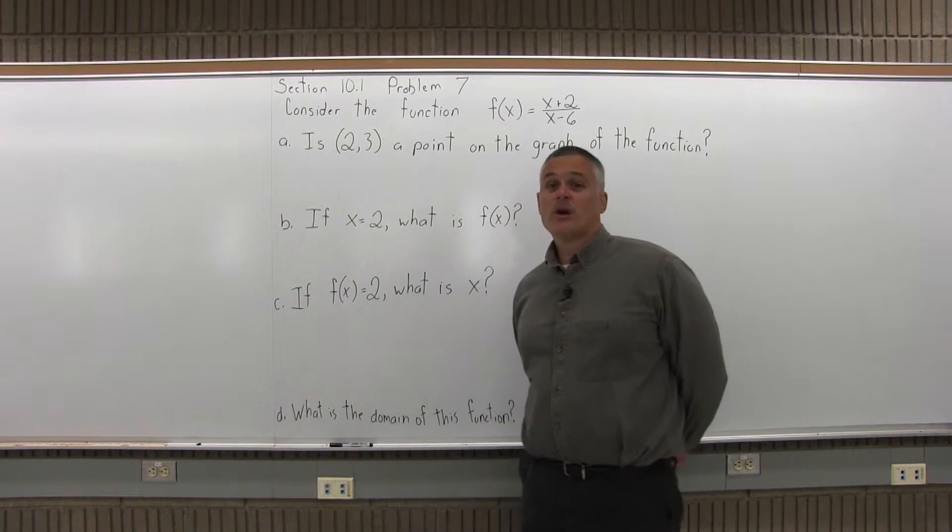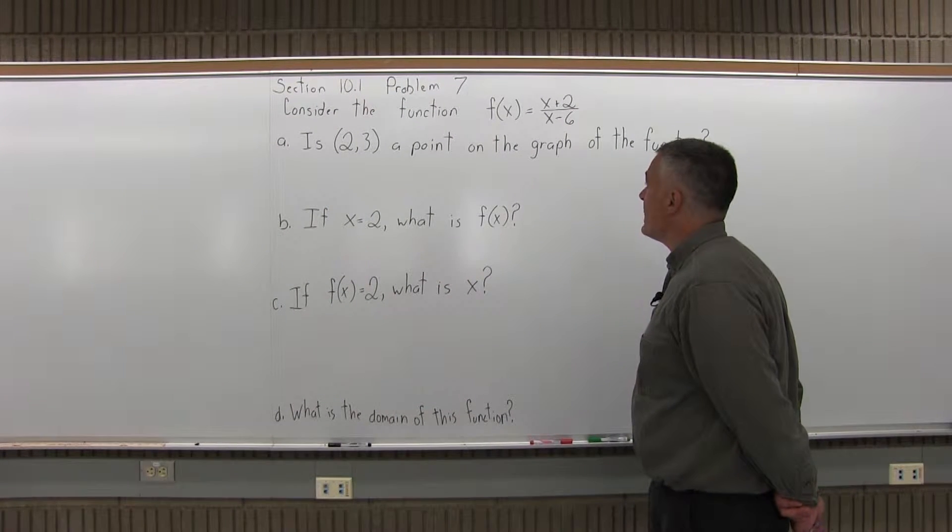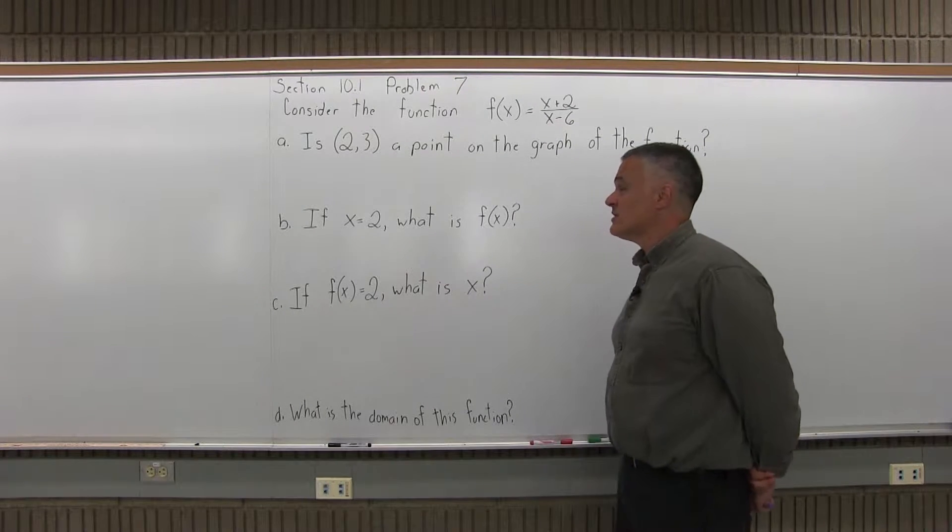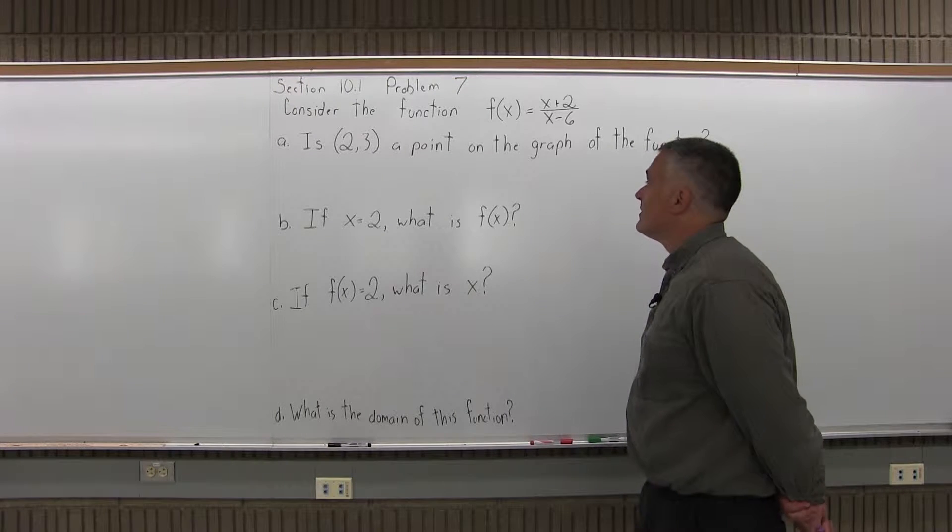This is Section 10.1, Problem 7. It says, consider the function f(x) equals x plus 2 over x minus 6, and then it asks four questions about that function. The first question is, is (2,3) a point on the graph of the function?